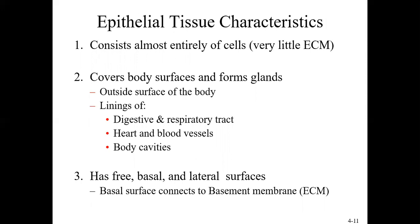Looking at specific characteristics of epithelial tissue: number one, it is almost entirely formed by cells — there is very little extracellular matrix. Number two, it is found around body surfaces and glands: on the outside of the body as skin, and inside lining the digestive tract, respiratory tract, the membrane around the heart, blood vessel walls, and body cavity linings. Number three, epithelial cells have a free surface on the outermost side, a basal surface at the bottom, and lateral surfaces on the sides. The basal surface connects to the basement membrane, part of the extracellular matrix.